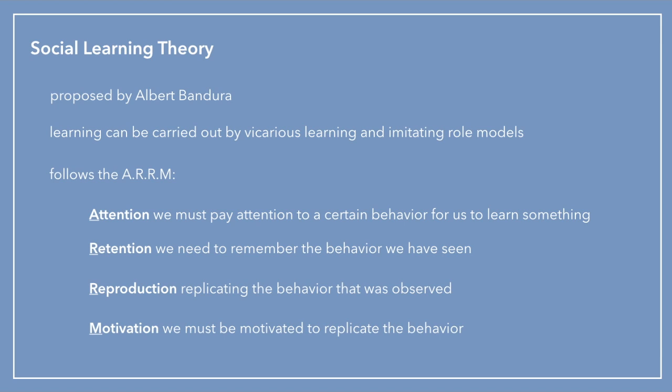This follows the ARM procedure — just memorize it as ARM. Attention: we must pay attention to a certain behavior in order to learn something, allowing our sense perception to realize what's going on. Retention: we need to remember the behavior we have seen. Reproduction or motor reproduction: replicating the behavior that was observed. Motivation: we must be motivated to replicate the behavior, or we will not do it in the first place.